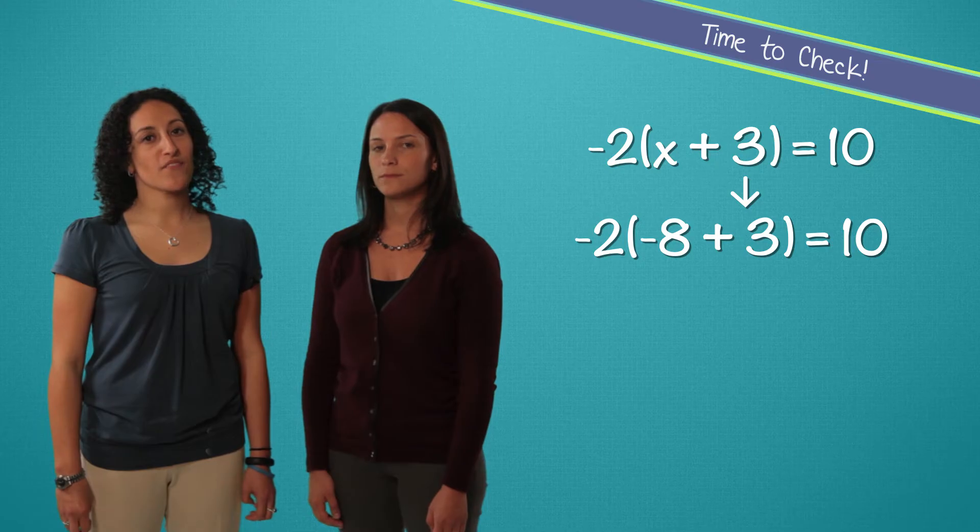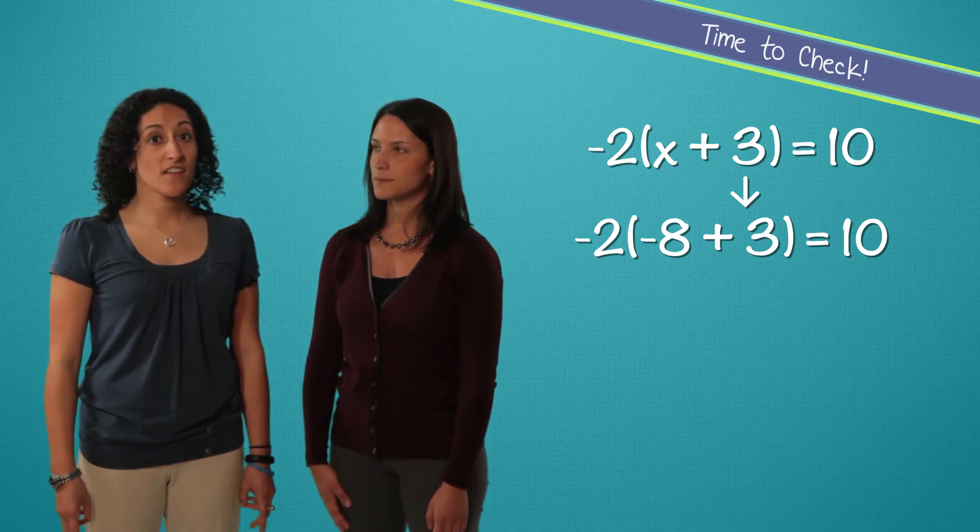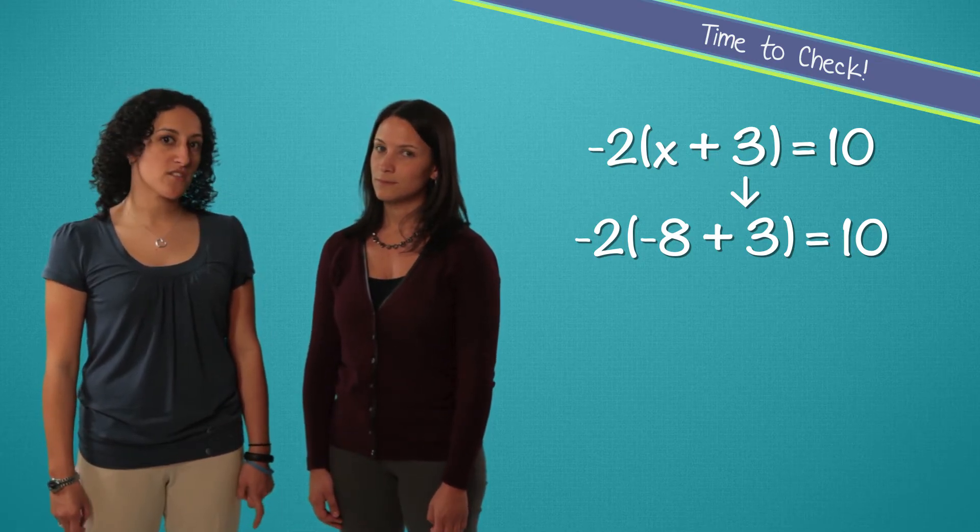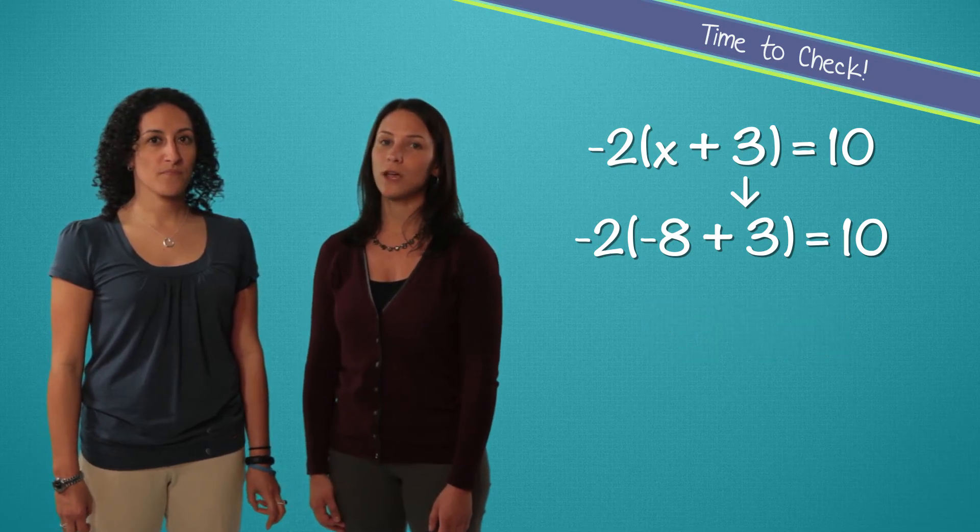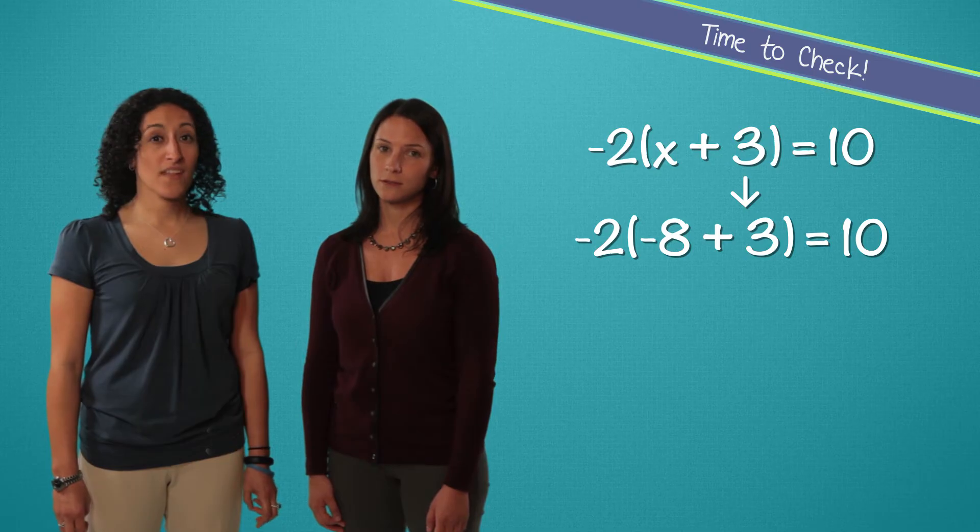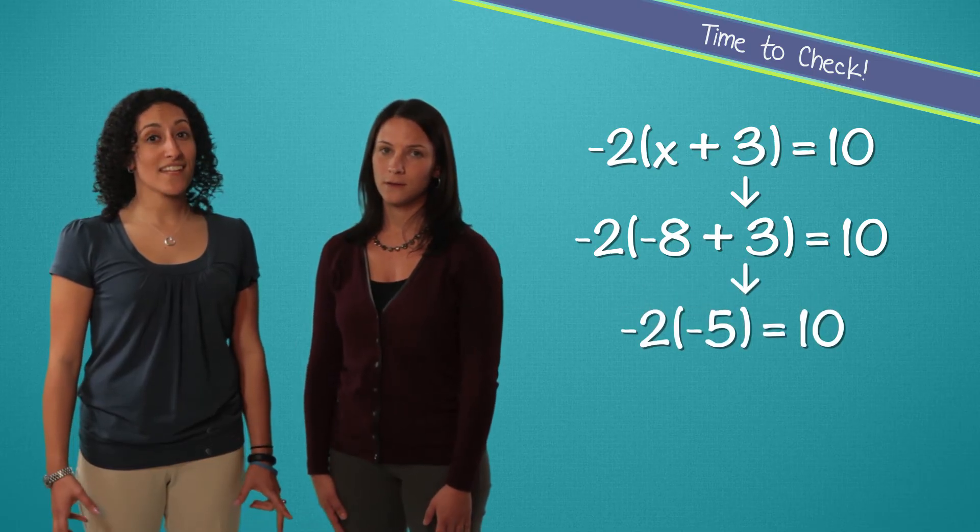Negative 2 times the sum of negative 8 and 3 equals 10. To solve it, we use the order of operations, PEMDAS, parentheses first. So negative 8 plus 3. Remember, different sign, difference. Negative 8 plus 3 equals negative 5.